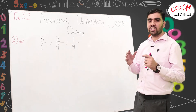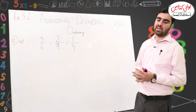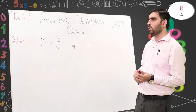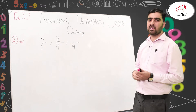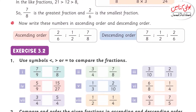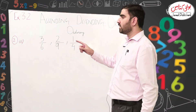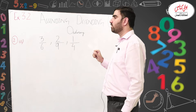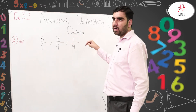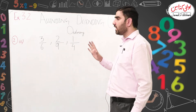Now we will see fractions in ascending order and descending order. We have exercise 3.2, question No. 2, part 3: the fractions are 3/6, 2/9, and 1/4. You can see that these are unlike fractions, because their denominators are different.